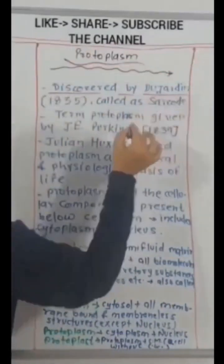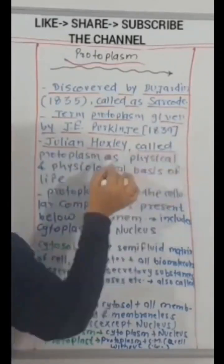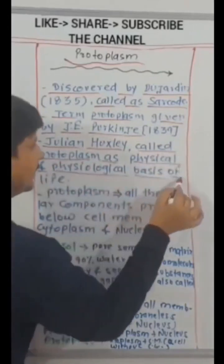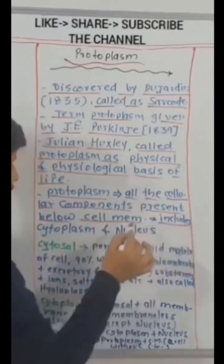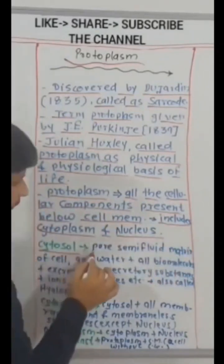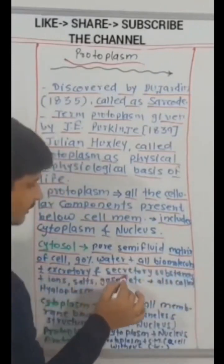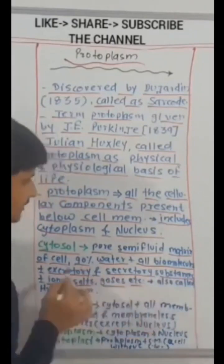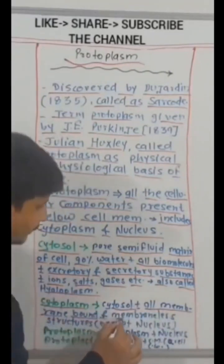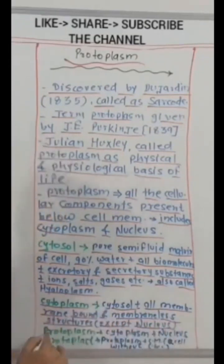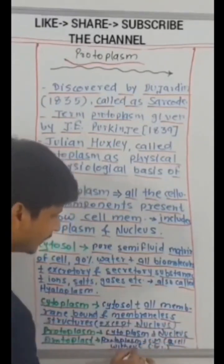Protoplasm, discovered by Dujardin. Called as sarcode. Term protoplasm given by J.E. Purkinje. Julian Huxley called protoplasm as physical and physiological basis of life. Protoplasm, all the cellular components present below cell membrane, includes cytoplasm and nucleus. Cytosol, pure semi-fluid matrix of cell. 90% water plus all biomolecules plus excretory and secretory substances plus ions, salts, gases, etc. Also called hyaloplasm. Cytoplasm, cytosol plus all membrane bound and membrane-less structures except nucleus. Protoplasm, cytoplasm plus nucleus. Protoplast, protoplasm plus cell membrane. A cell without cell wall.